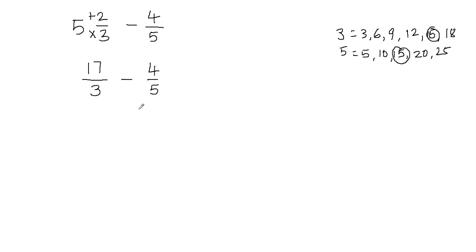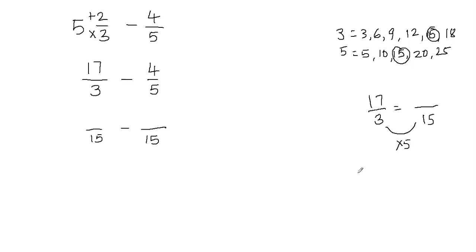Now I'm going to use the least common multiple to make the denominators equal. The denominators of my new fractions should be 15. I'll take my original fraction 17 over 3 and make the denominator 15. To get from 3 to 15 I multiply the denominator by 5, and I also multiply the numerator by 5 to keep the fraction balanced. 17 times 5 gives me 85. So 17 over 3 is equal to 85 over 15, and I can replace 17 over 3 with 85 over 15.